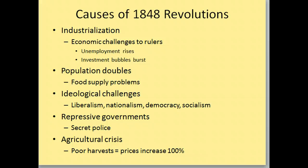There's an agricultural crisis — we have a lot of poor harvests, which means there's not enough food. Supply is low, demand is still really high because of that population doubling, and prices are going to increase about 100%, which is huge inflation. We know that inflation from the French Revolution causes a lot of problems. When you're studying for the quiz at the end of this nationalism-unification unit, you have to know how each of these five things helps cause the revolutions.